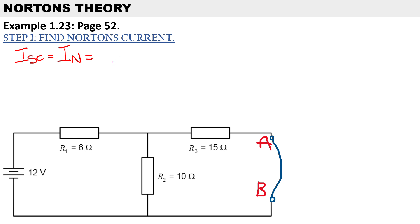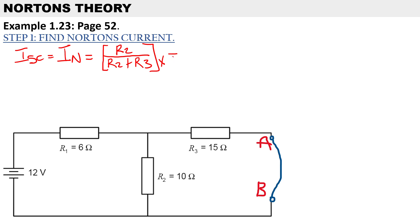To calculate Norton's current we use the current divider rule. The formula is: R2 over (R2 plus R3), and we multiply that by the total current.